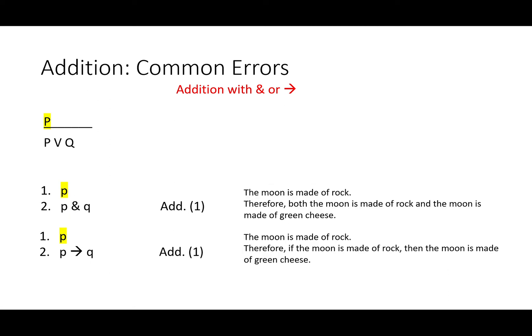We can also translate them and see that again it leads to some lies. The moon is made of rock, therefore both the moon is made of rock and the moon is made of green cheese. That's not a valid argument. The moon is made of rock similarly does not entail if the moon is made of rock, then the moon is made of green cheese.